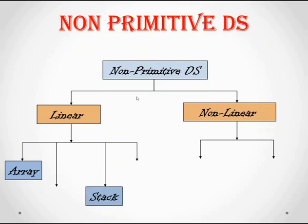The second linear data structure is stack. In a stack, insertion and deletion operations are performed at a single end — this is the LIFO concept: last in, first out. Next is linked list, which is used to maintain a list in memory. It is a collection of nodes stored in non-contiguous memory locations. Linked list has various categories, which we'll cover in upcoming sessions.